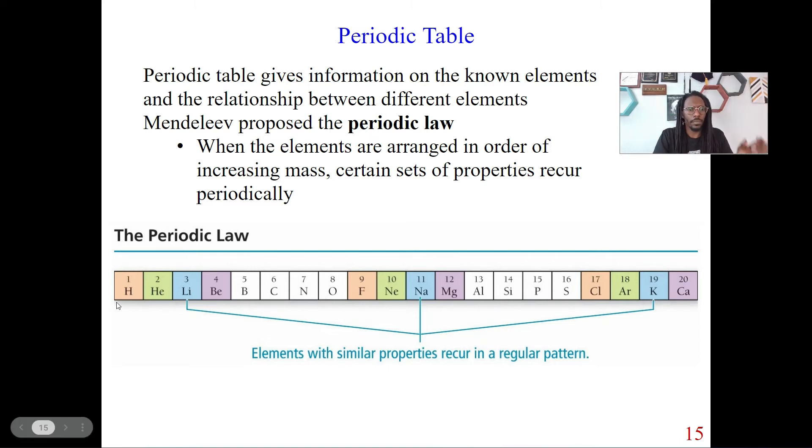So the elements are increasing. So they're increasing in mass. We need to understand that they're increasing in mass. So what we will see with this periodic law is that as we set these elements in this increasing order of mass, certain properties are going to start reoccurring over and over again.